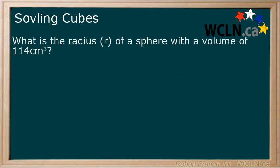What is the radius of a sphere with a volume of 114 centimeters cubed? First, start with the formula V equals 4 thirds pi r cubed. In this example we will use 3.14 for pi and answer to two decimal places.